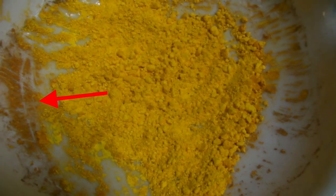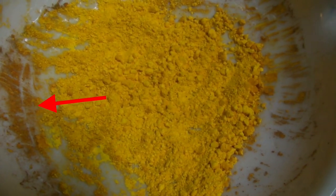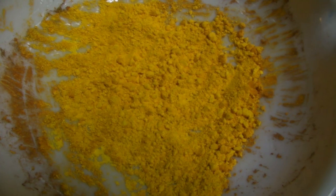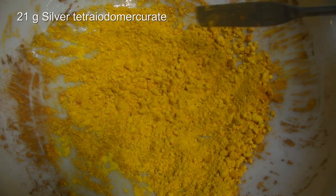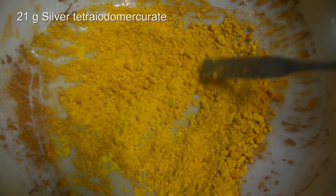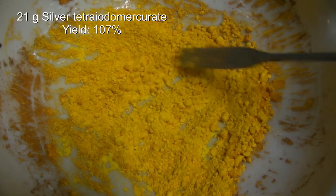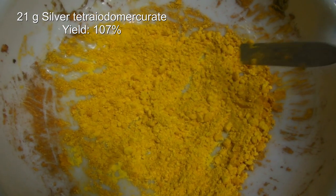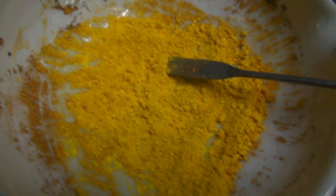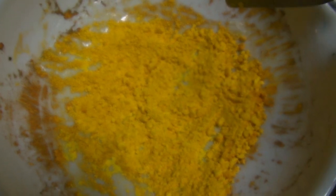Especially on the rim it can be seen after the drying that the product contains silver iodide because it turns darker due to the formation of elementary silver. 21 grams of silver tetra-iodo-mercurate were obtained which corresponds to a yield of 107%. According to the literature a quantitative yield is expected which is why the additional weight might be due to the formation of silver iodide.